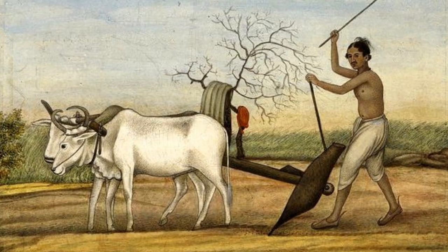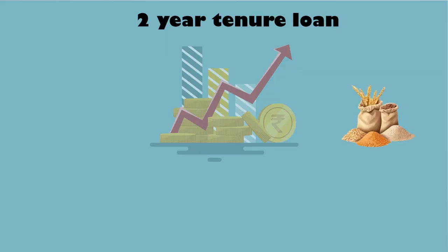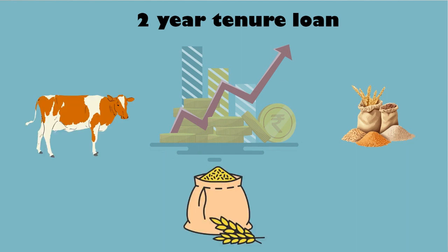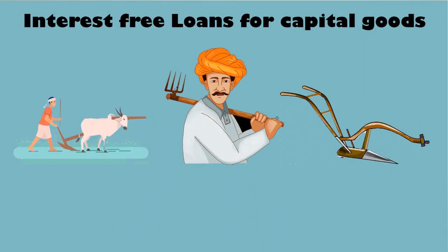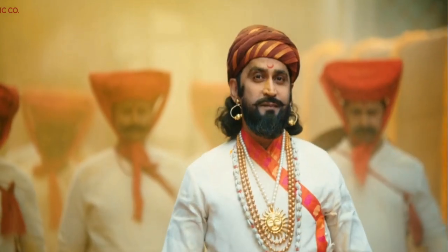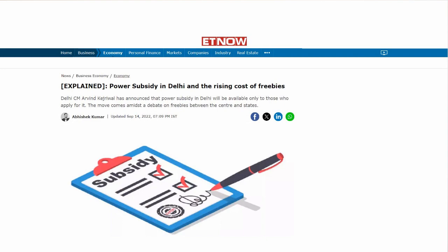In the 17th century, agriculture was the chief occupation of people in India. To encourage and help people in agriculture, Shivaji Maharaj gave loans to buy grains, cattle, and seeds, to be repaid in around two years. For capital expenses — such as oxen, supplies, or equipment for farming — interest-free loans were provided. He asked his government representatives to work on the ground, understand where people were lacking, and help where help was actually needed, instead of just giving out freebies to become popular.